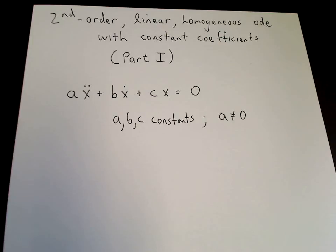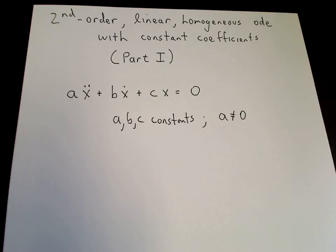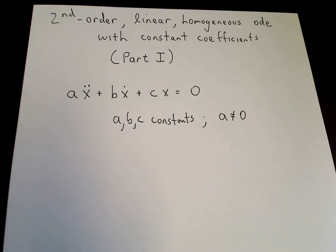We're going to solve this equation by finding two independent solutions. Then, using the principle of superposition, we'll form a linear combination of those two independent solutions to construct a general solution. The general solution will have two free constants, c1 and c2, and we'll use the initial conditions on x and on x-dot to specify those two free constants.